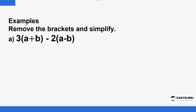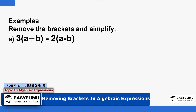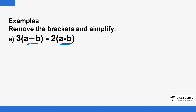So we have our first example here. These are what we call brackets. If you have expressions covered within brackets, you look at the number that is outside the bracket — that number is supposed to multiply both terms inside the bracket. So three will multiply a and also multiply b. The same happens with two: it will multiply a and also multiply b.